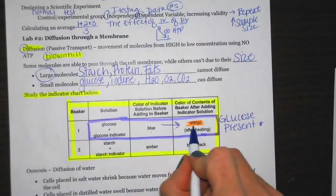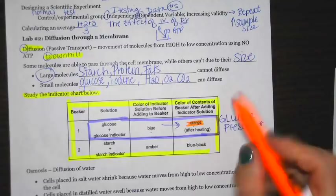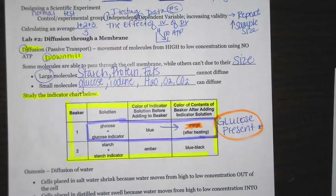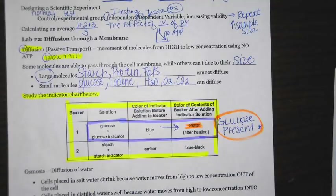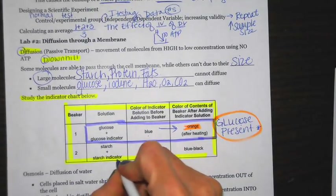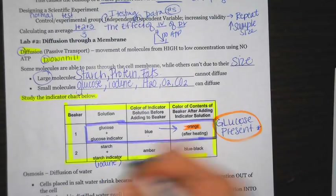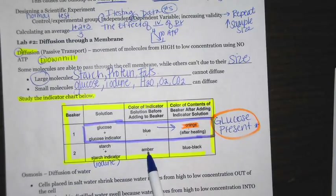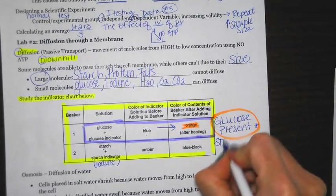Most people can remember the color it changed to, but they forget what it means. Remember, orange juice has a lot of sugar in it — glucose is an example of a simple sugar — so the orange color indicates glucose present. The next indicator is for starch, which is determined using the starch indicator called iodine, sometimes represented by the letter I. When starch and iodine are together, it changes from an amber color to a blue-black color, meaning starch is present.